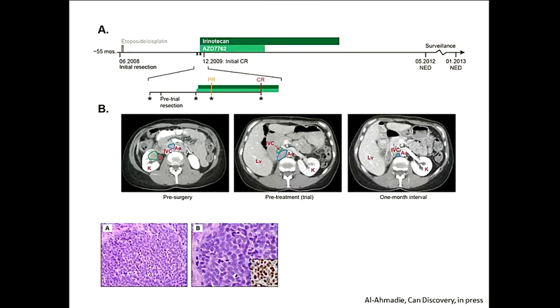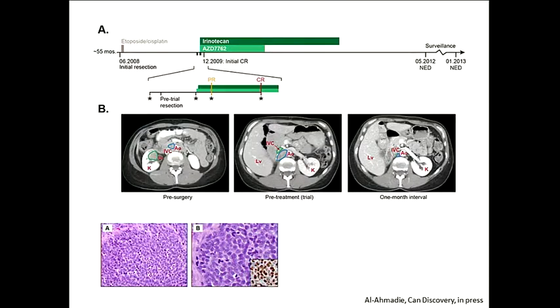Maybe we can do trials more rationally in the future once we have this information prospectively. This is a quick third case — the most insightful mechanistically that we've done. This is a young woman in her early 40s who presented with a right ureteral tumor. Ureteral cancers are relatively uncommon, and when they looked at it under the microscope, this woman had a pure small cell cancer. Small cell cancers are most common in the lung, but you can see them pretty much anywhere. Before this patient at Sloan Kettering, every single patient with small cell cancer of the urothelial tract had died of their disease.